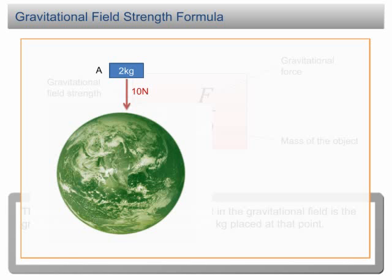the gravitational field strength will be 10 N over 2 kg, which is equal to 5 N per kg.